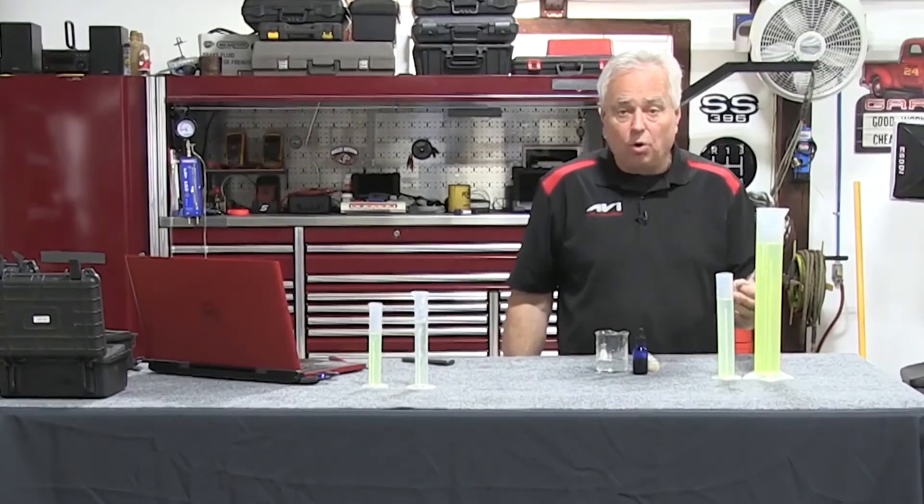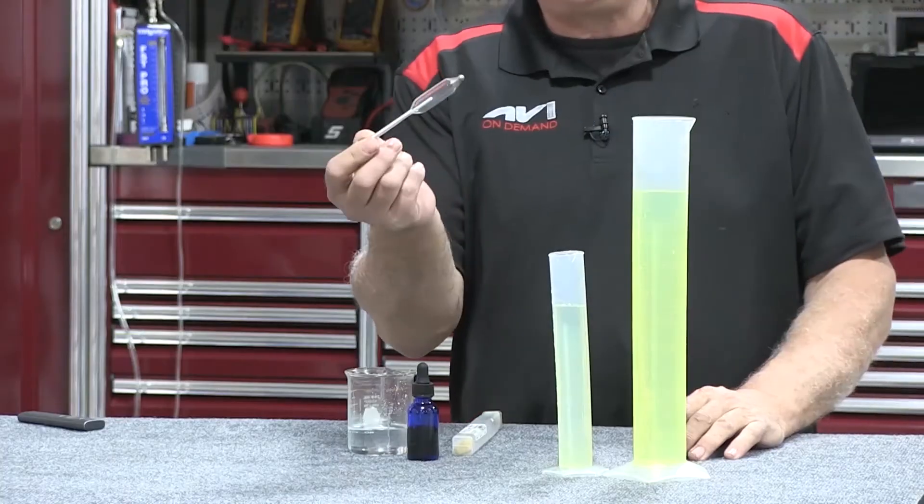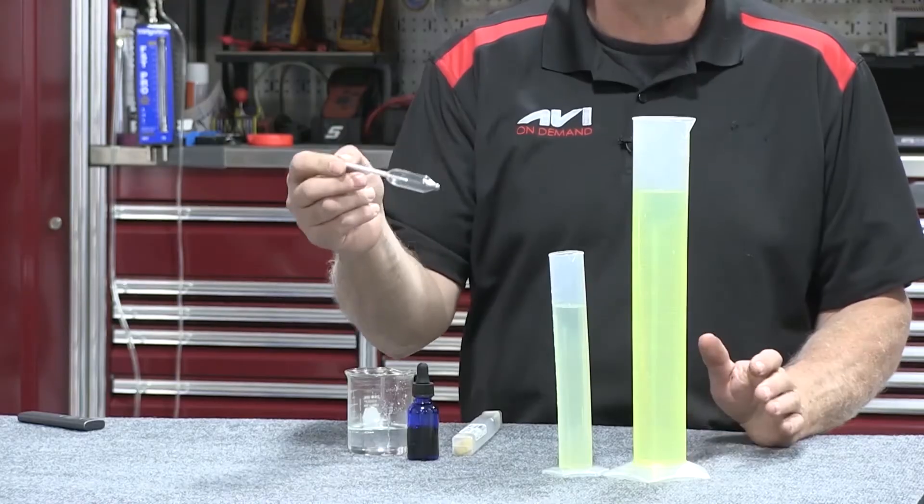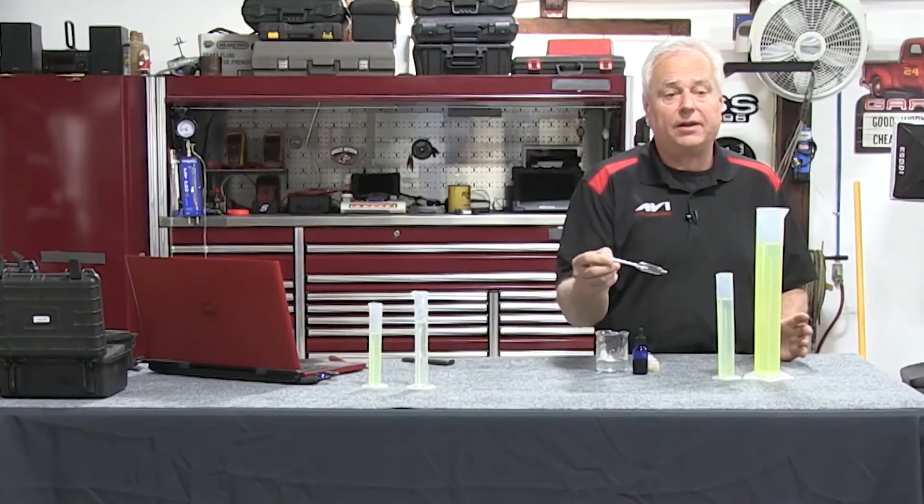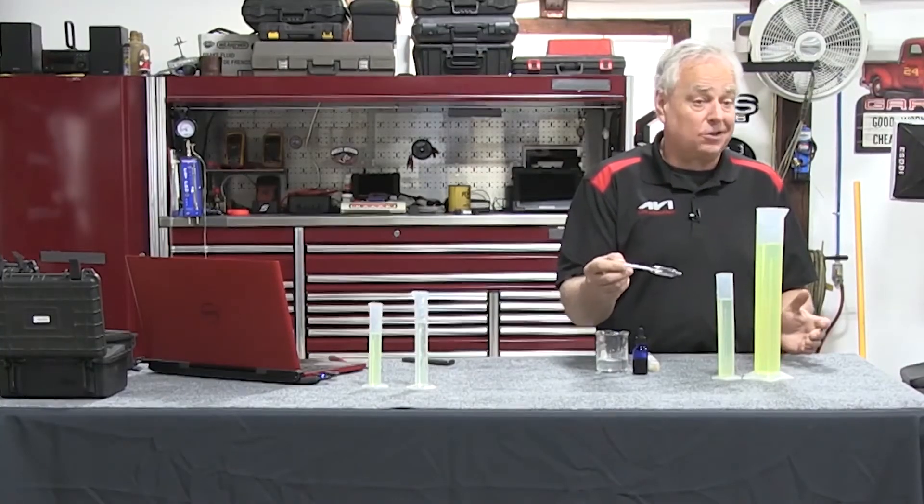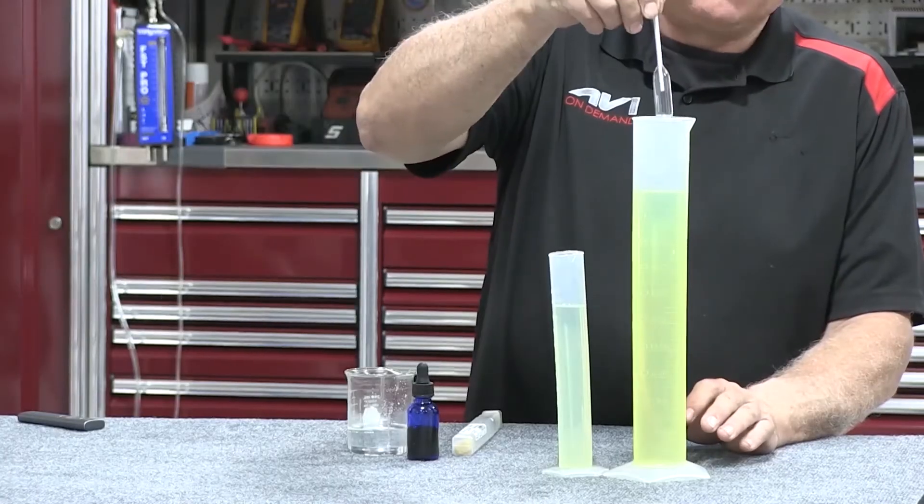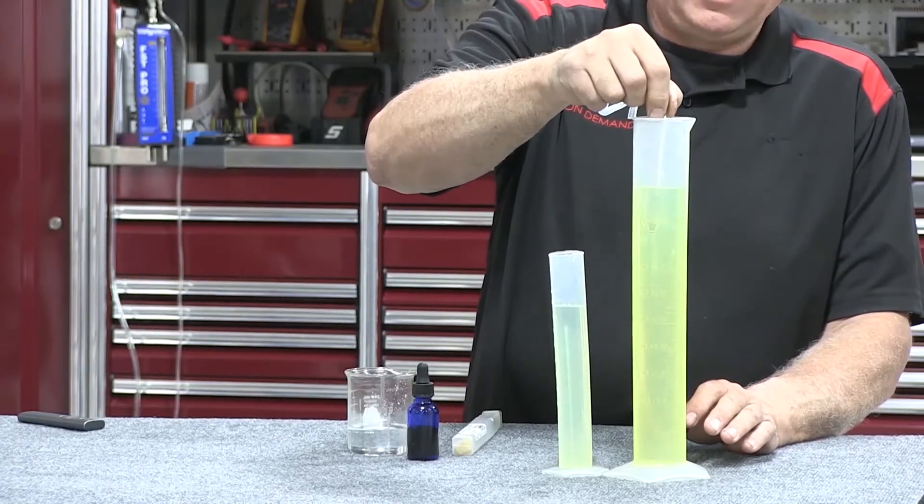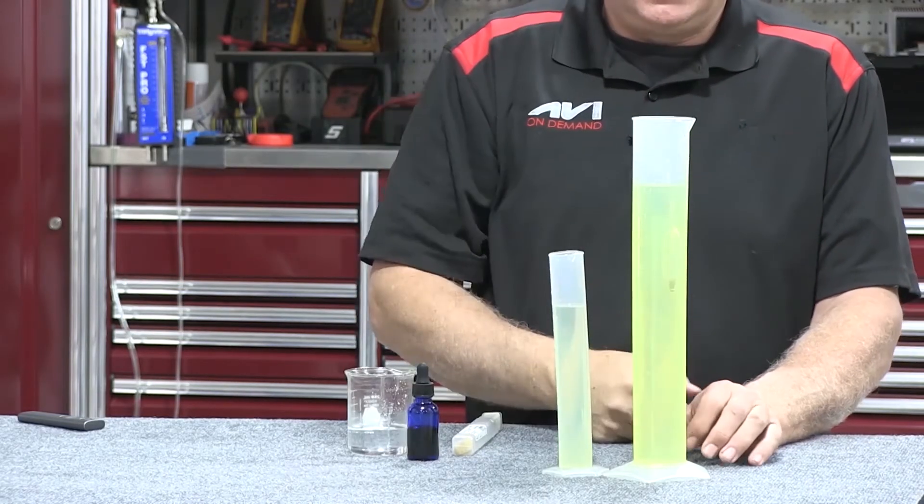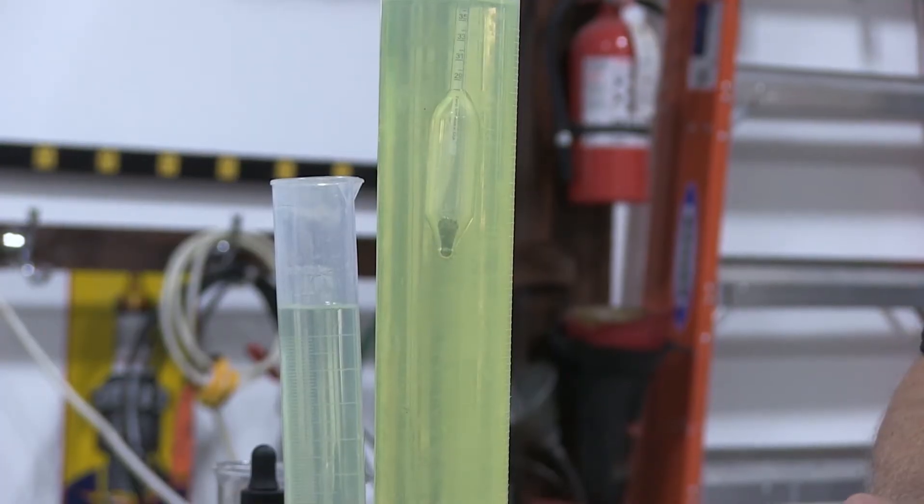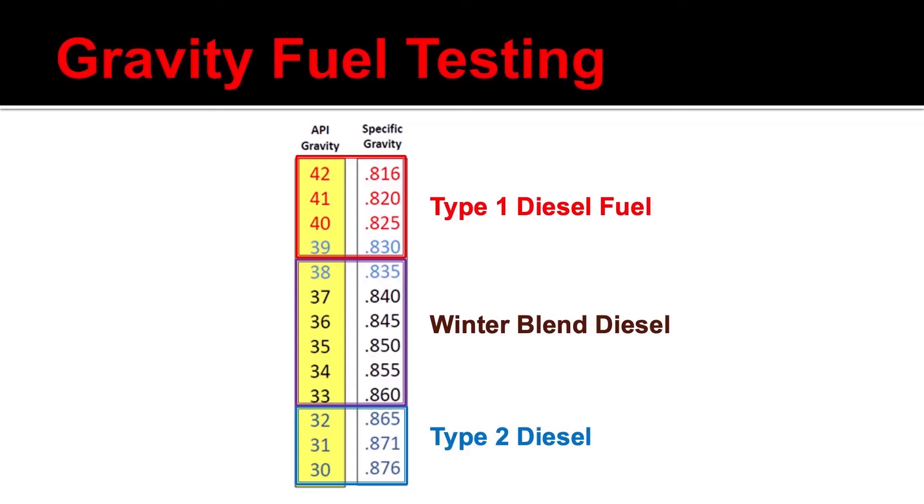We're going to test this fuel for specific gravity to see if it is diesel, diesel one winter blend, or diesel two, or maybe not diesel at all. I'm just going to take my hydrometer and drop it in the fuel. It's that simple. This particular number is around 36. We can see on the chart that 36 equates to a winter diesel blend.